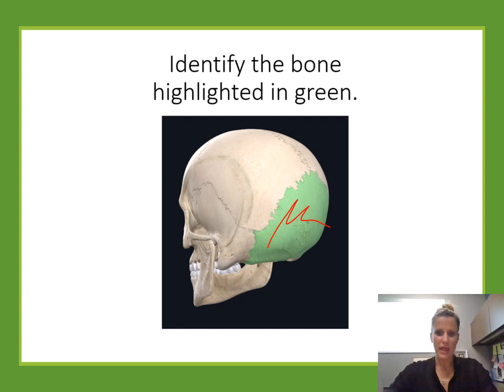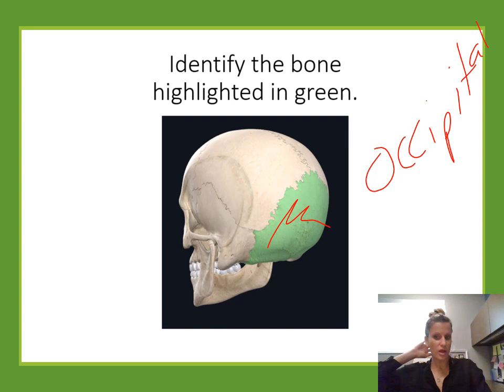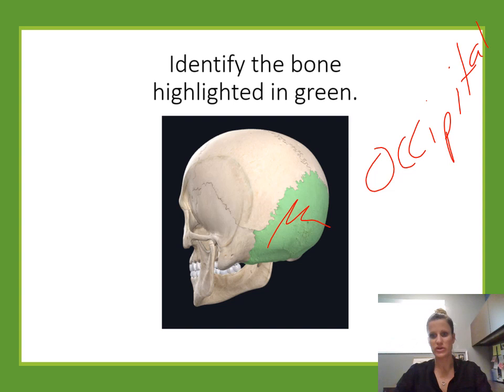Identify the bone. This is the bone at the back of the skull. The bone at the back of the skull is the occipital bone. If you remember the regions — the frontal region, temporal region, occipital region — those are named for the bones that are underneath.